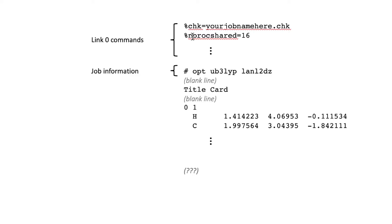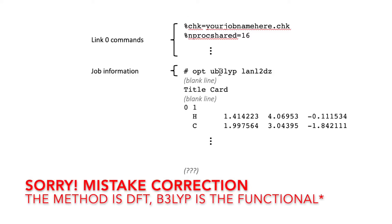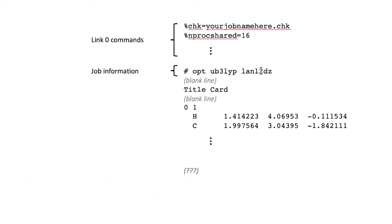Next, which comes right after the link 0 commands with no lines in between, marked with the pound sign or hashtag — that's the job information. You at least need your method, which in this case is B3LYP, and a basis set that applies for all the atoms you have. For this I have LANL2DZ. You might be more familiar with the Pople basis set, like 6-31g. And then 'opt', which means I want to optimize the geometry. If there's nothing there, that would just be taking the single point energy of the geometry that you provide.